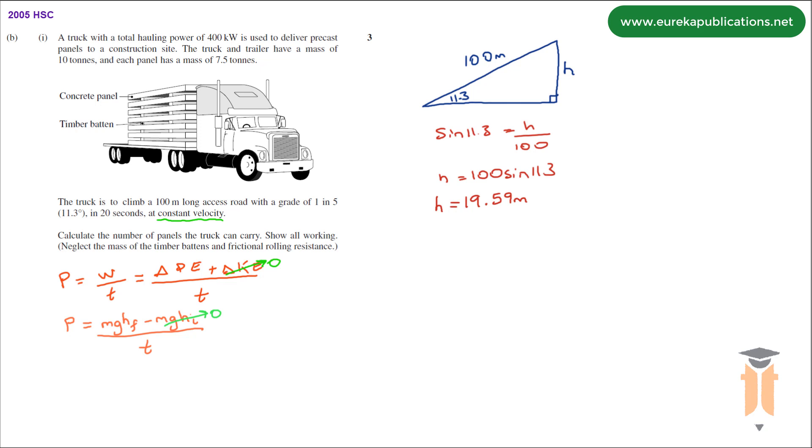Now that we've got our final height I can substitute that value into our power equation. I've got 400 kilowatts which is 400,000 watts and that's equal to my mass which I want to find, times gravity which is 10 times the final height which is 19.59, divided by the time which is 20 seconds.